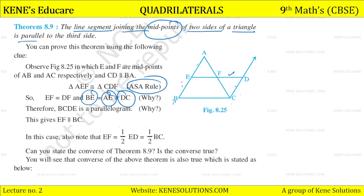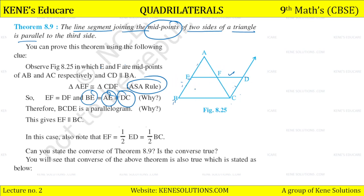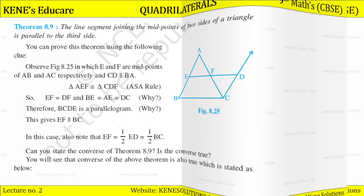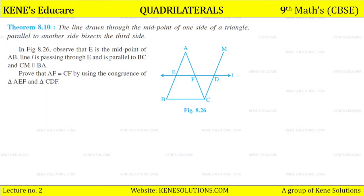Can you state the converse of theorem 8.9? You will see that the converse of the above theorem is also true, which is stated as below: The line drawn through the midpoint of one side of a triangle, parallel to another side, bisects the third side.